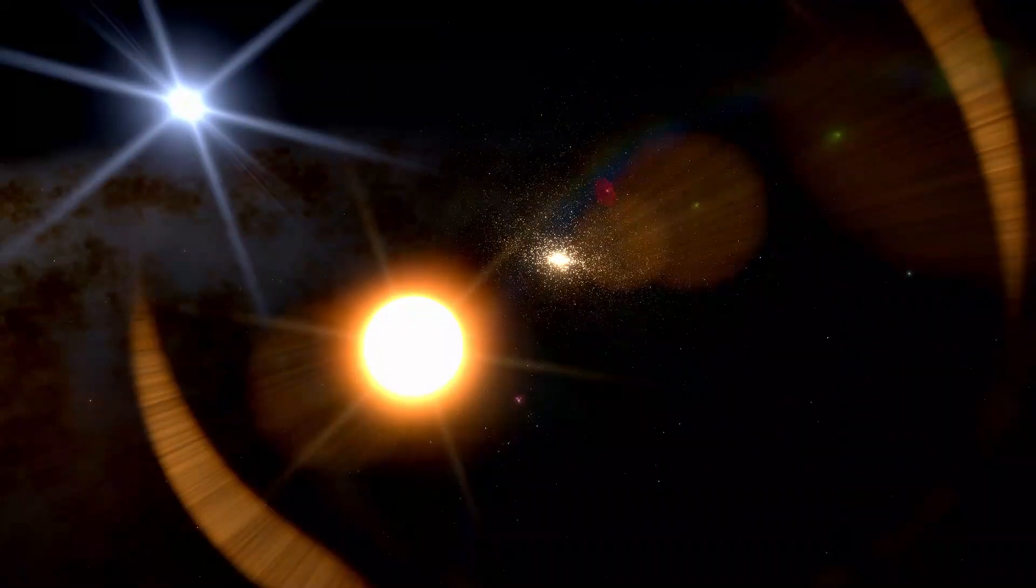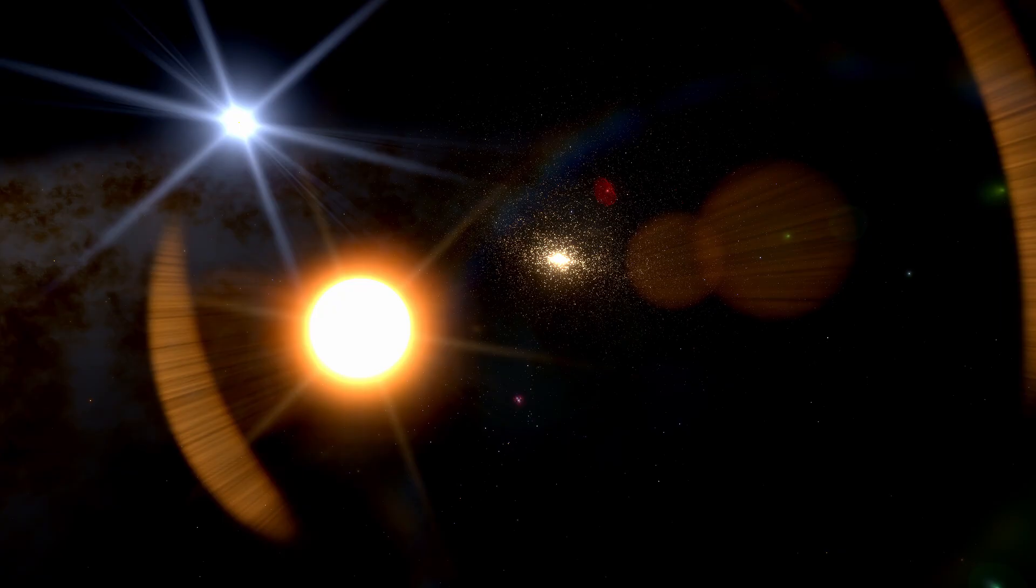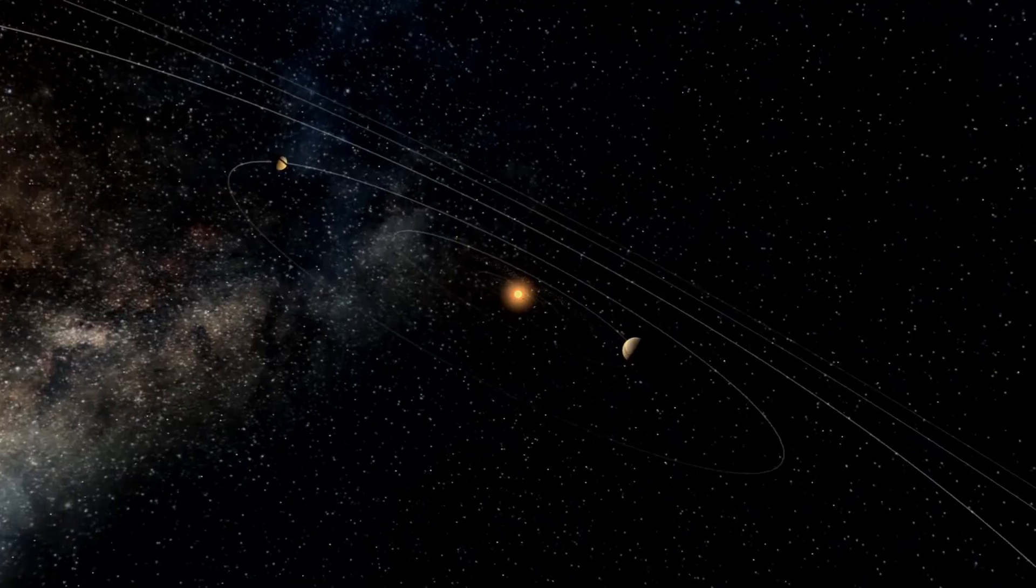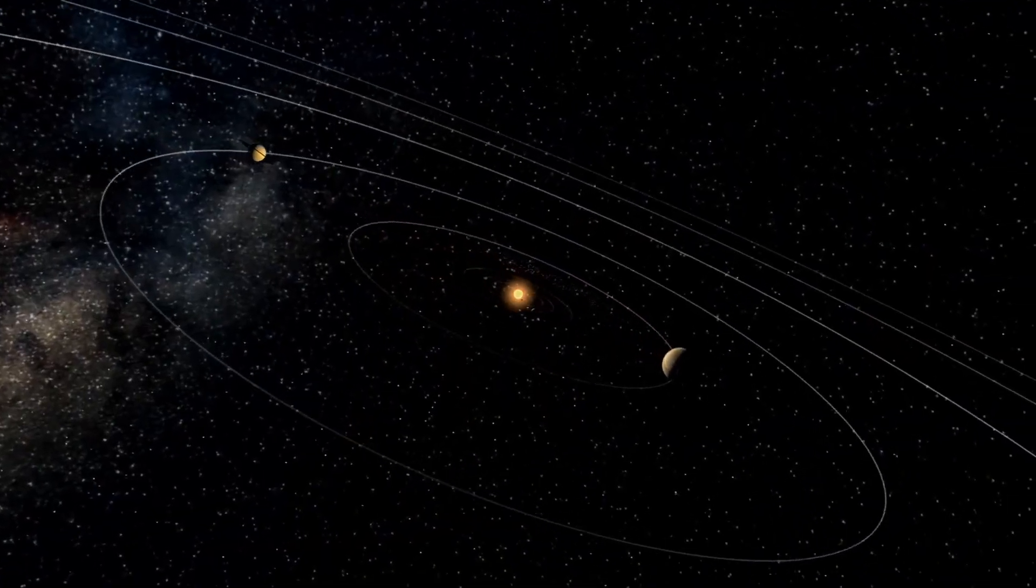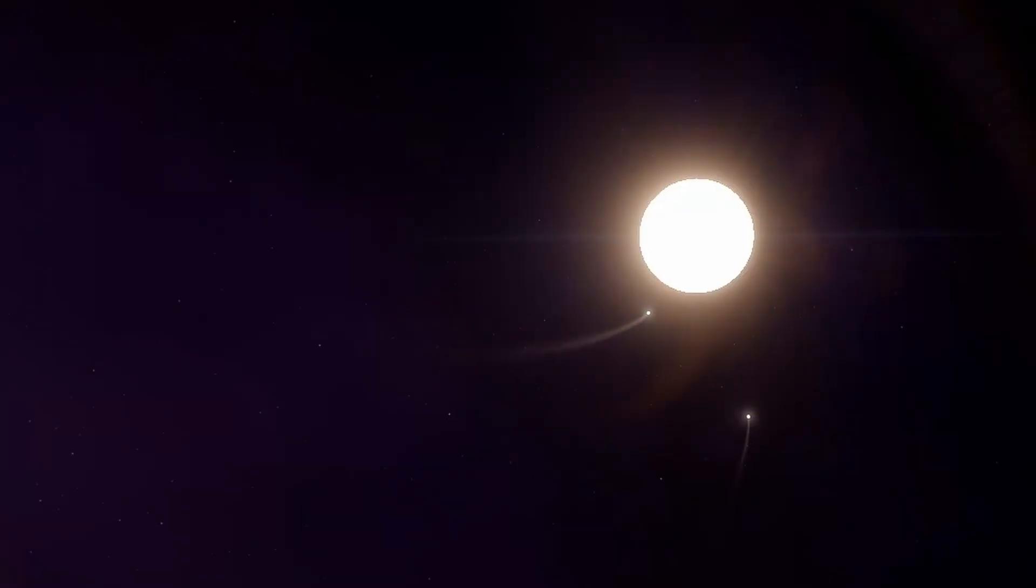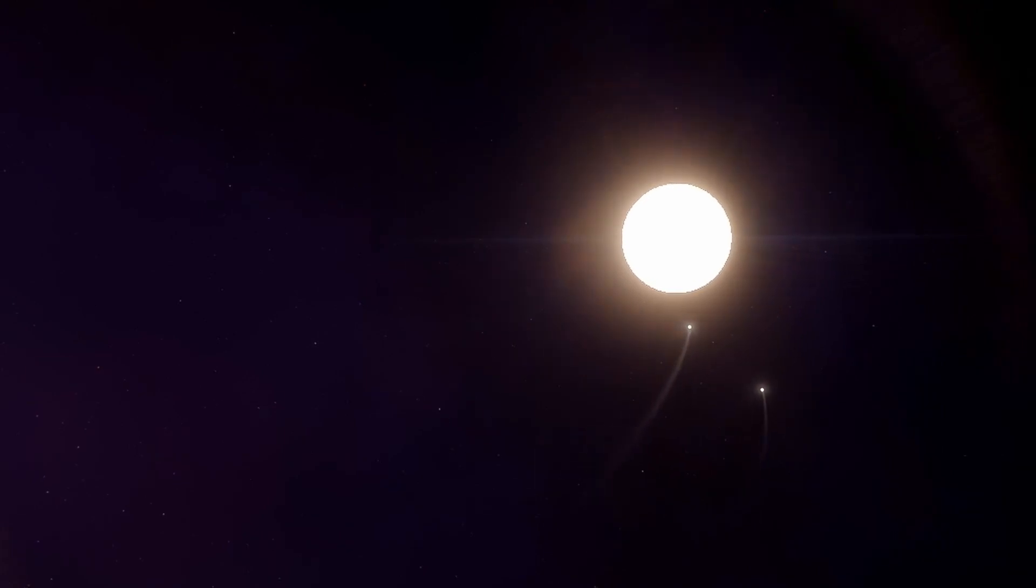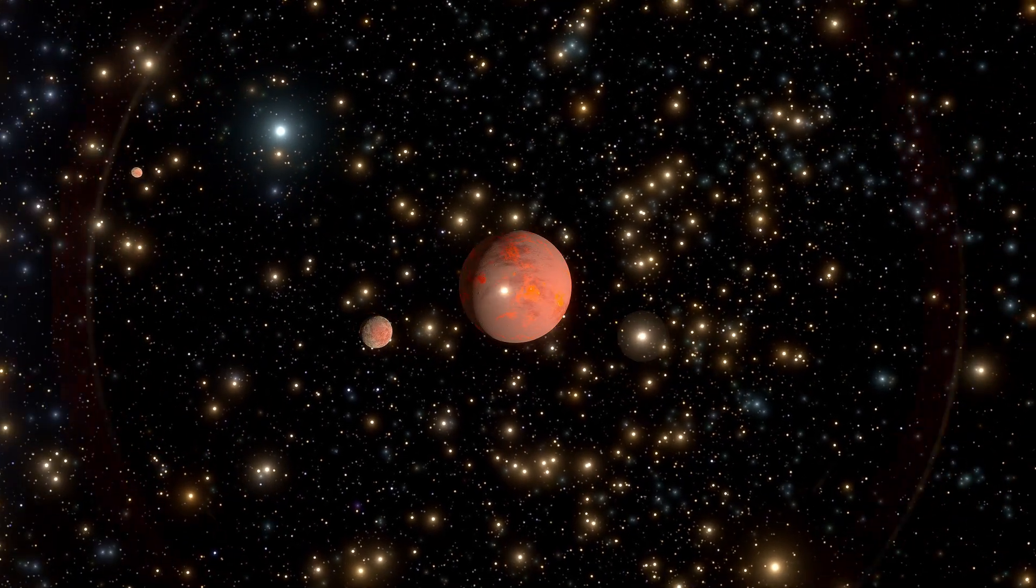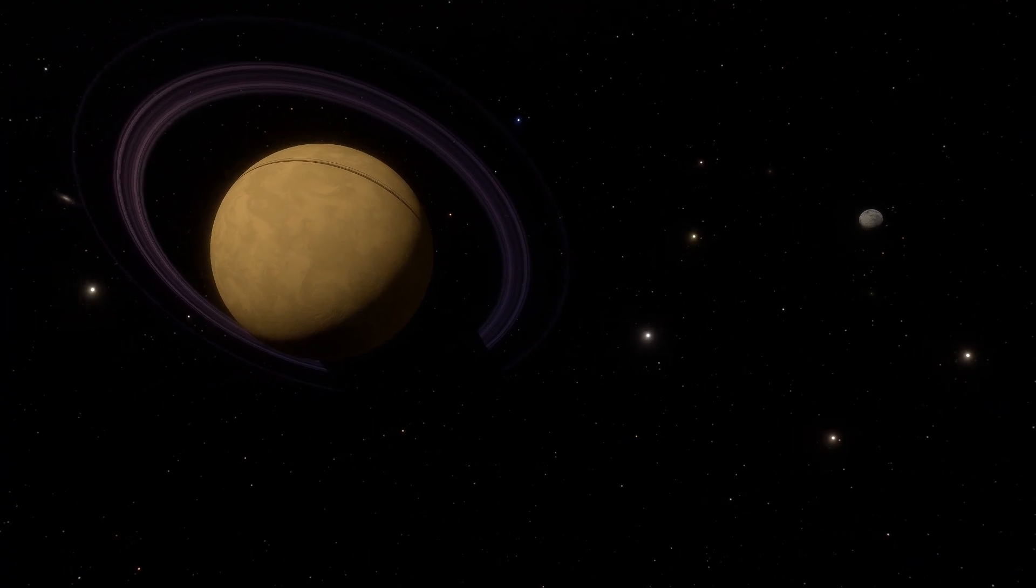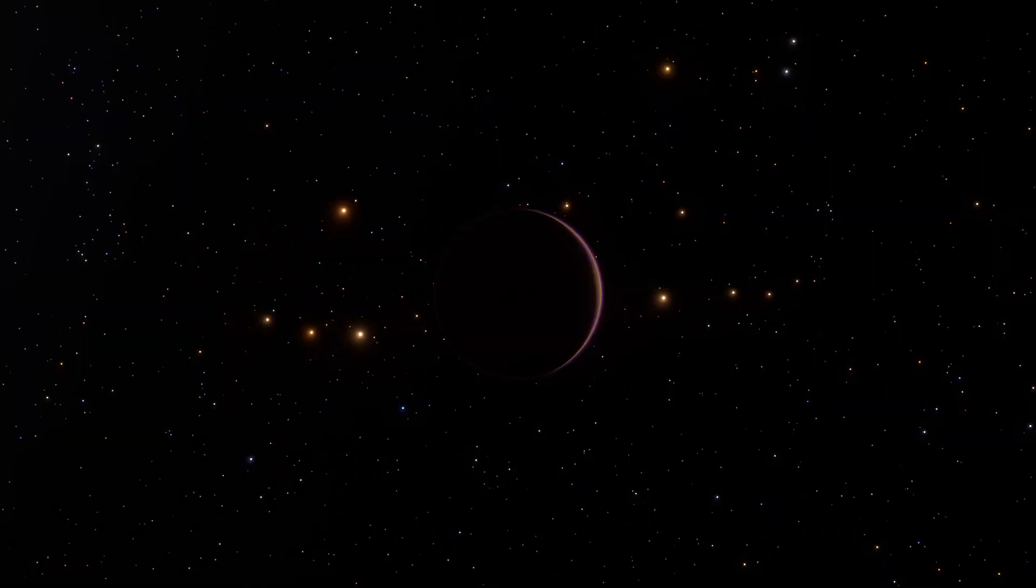When the new data overlaid their trajectories, something impossible appeared on screen. The two weren't moving randomly. They were converging on a single point in space. A perfect intercept path near the orbit of Venus. Even stranger, both objects were releasing identical frequency pulses, 11.23 seconds apart. Not radio, not natural plasma bursts. Structured, encoded. 3i ATLAS wasn't wandering through space. It was communicating. And SWAN was answering.